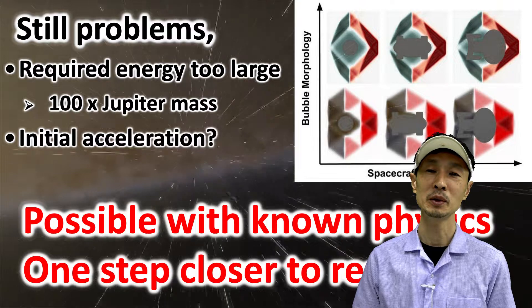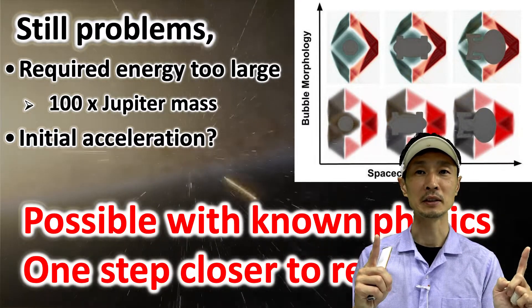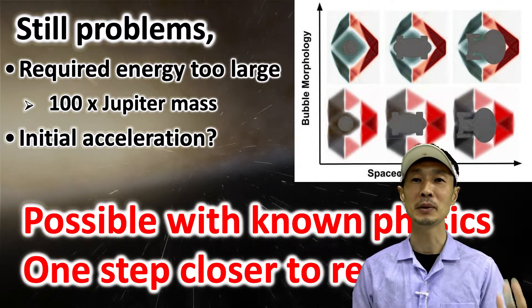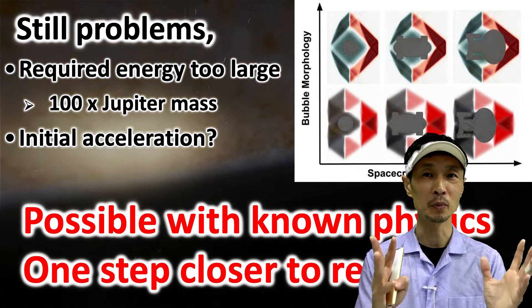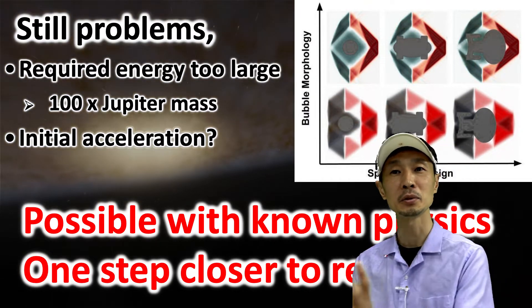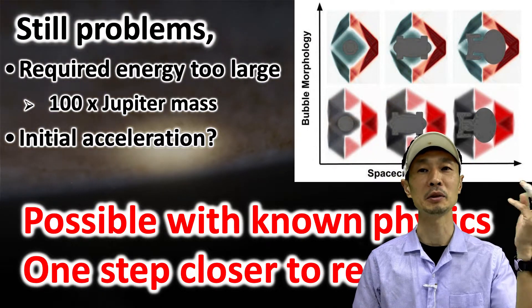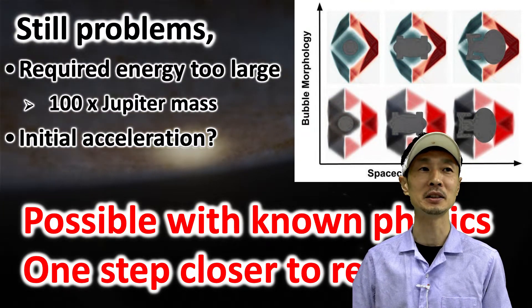Also, he showed that this soliton warp bubble can travel faster than the speed of light because it's warping. However, how you initially accelerate this soliton warp bubble to speeds faster than light is not clear. We need to figure out how to do that.